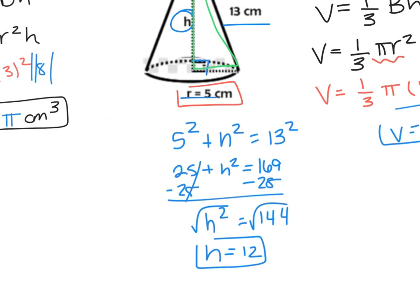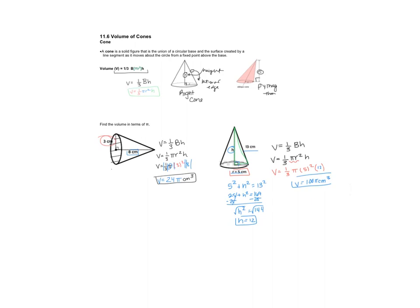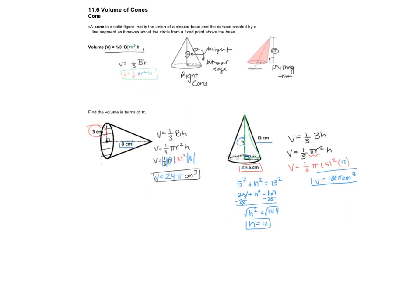So that is your lesson for today. We just found the volume of some cones. Here's what you need to know. Your volume formula for cone is one-third Bh, or you can just write one-third πr²h. It is the exact same situation every time.